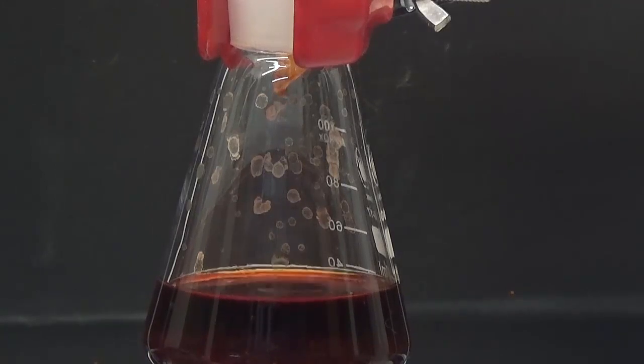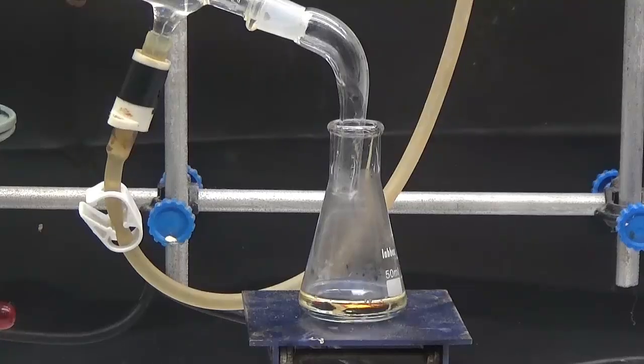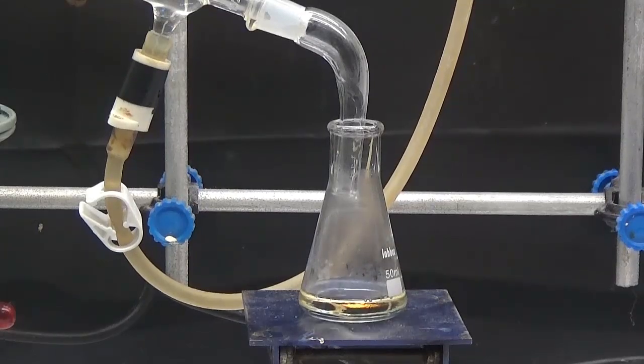In this video, we are only going to get 2-furoic acid by discarding the alcohol. The first thing is to purify the furfural by simple distillation, collecting the phase that distills between 155 and 165 degrees.